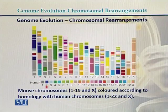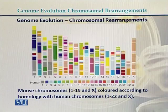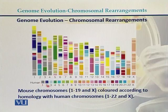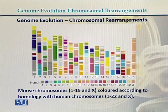Another example is chromosome 2. Human chromosome 2 has homology with the p-arm of mouse chromosome 1, with mouse chromosome 2, and with parts of mouse chromosomes 11 and 12. For human chromosome 3, it has homology with mouse chromosome 3 and with mouse chromosome 16. So here we can see that approximately 160 million years ago the mouse and humans separated from each other.